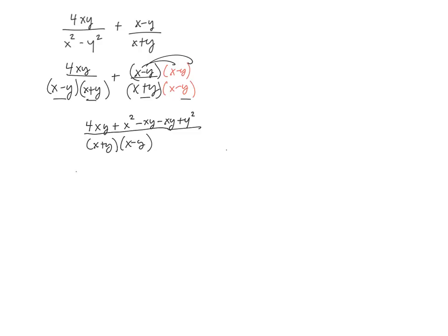So I'm going to write the x squared first. And then I have 4xy minus 1 minus another one. So that would be plus 2xy plus y squared. So that's what I have up top. And on the bottom, I've got x plus y, x minus y.